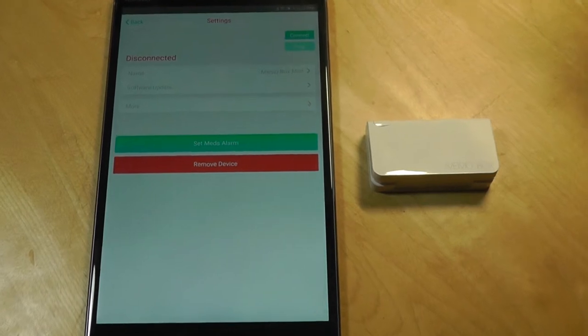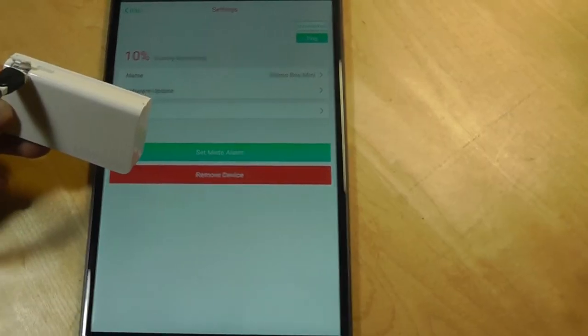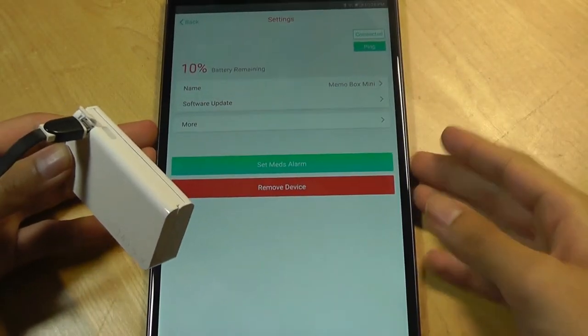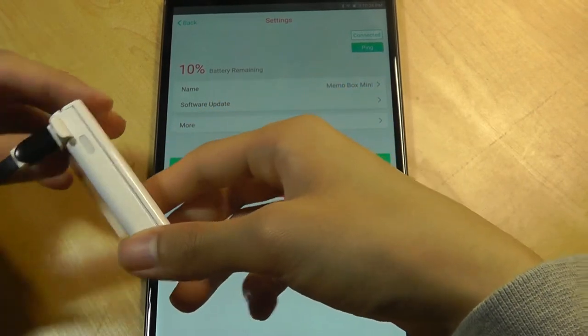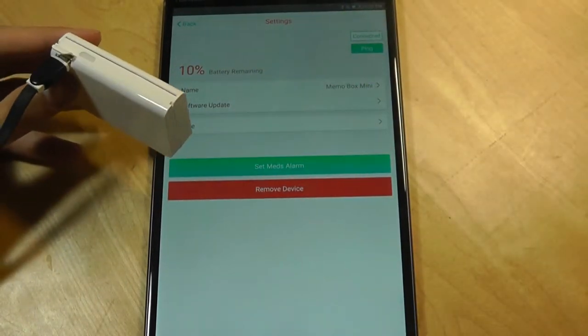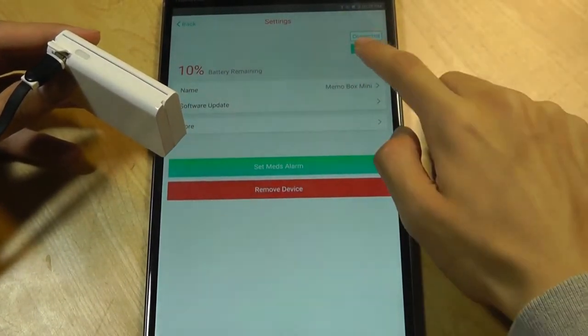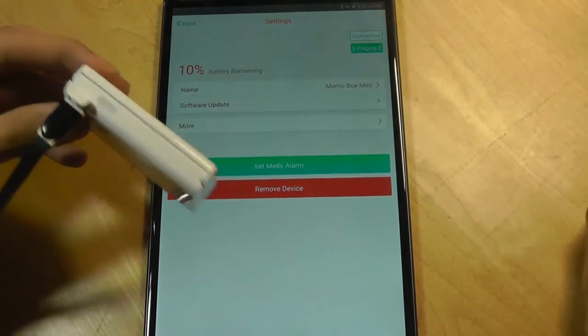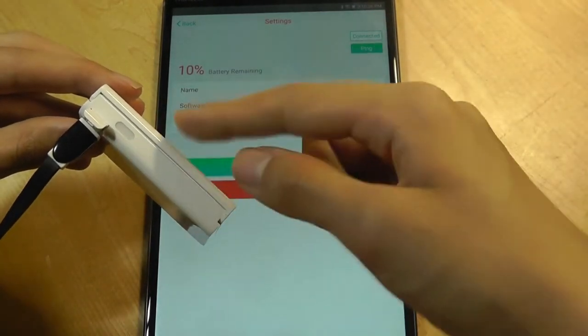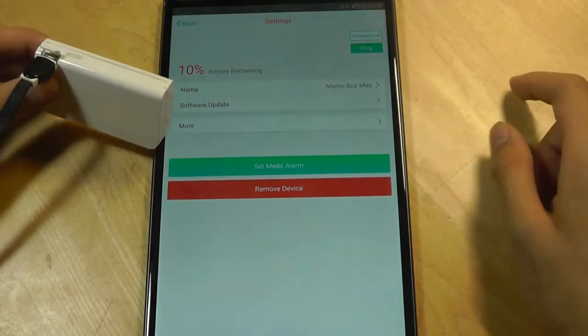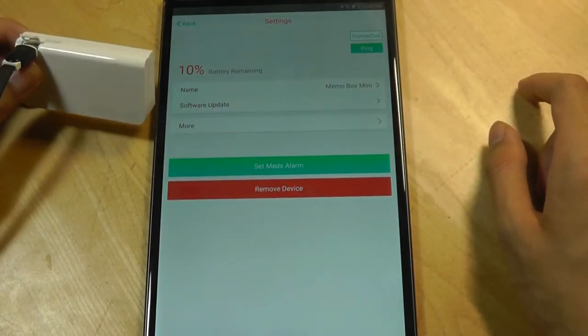Once we are connected, we can take a look at the settings drawer. Right now it's connected and it says we have 10% battery remaining and it's currently charging up. So hopefully this number should go up as well. If I tap on ping, that will ring the alarm and also have the LED lights start to flash as well.